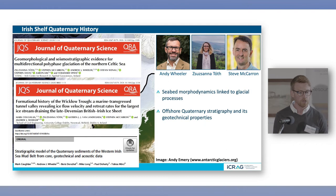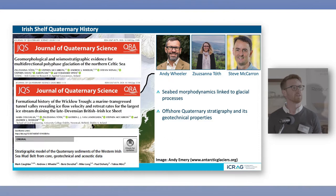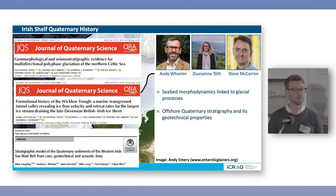Before we undertake any sort of constraint mapping or ground modelling, understanding the geological history of a particular area and how past geological processes have impacted on an area are quite critical. About 34,000 years ago most of the British and Irish Isles was covered in ice as ice advanced from the north, and this had a profound impact on our landscape and on our seabed. Understanding how this happened and what it meant for the seabed is quite important.